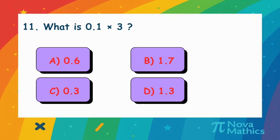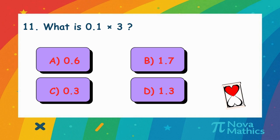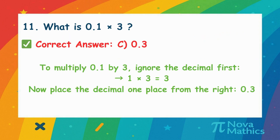10. What is 0.1 times 3? Let's multiply 0.1 by 3. First, think of it without the decimal. 1 times 3 is 3. Now put the decimal back 1 place. That's 0.3.